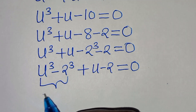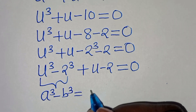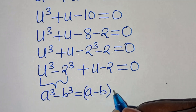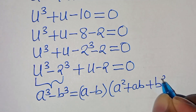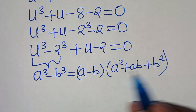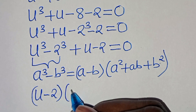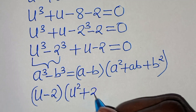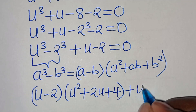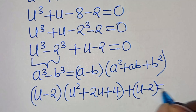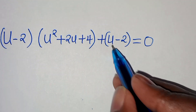We have the difference of two cubes here. The identity is: a³ minus b³ equals (a minus b)(a² plus ab plus b²). Applying this identity, we get (u minus 2)(u² plus 2u plus 4), plus u minus 2, equals 0.